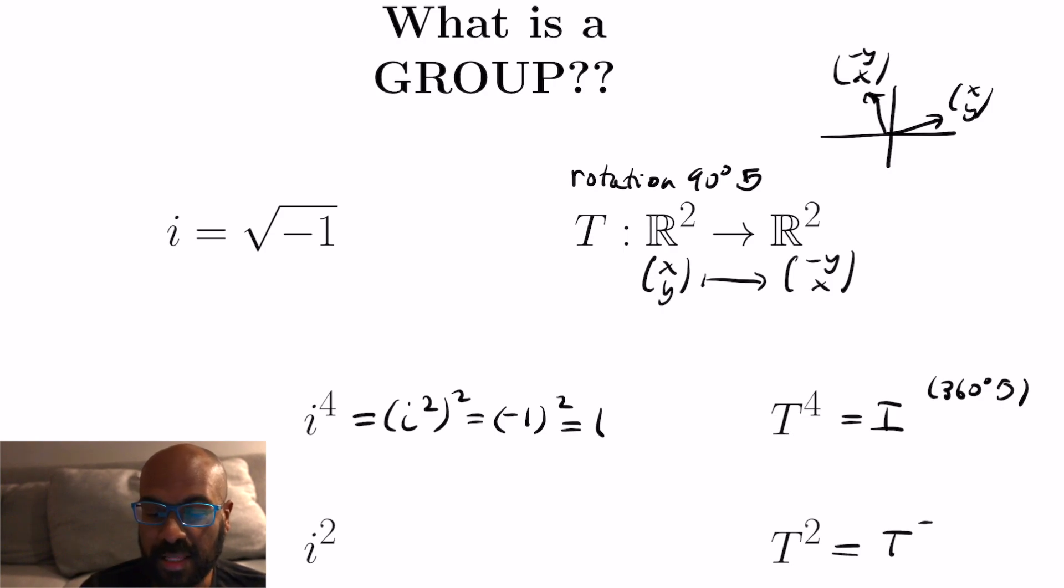And if you take T and raise it to the fourth power, you'll get the identity because you'll be rotating 360 degrees counterclockwise, which is the net effect of doing nothing essentially. If you look at T squared, then it's going to be the same as T to the negative two, the inverse of T. They're both rotation by 180 degrees. And i squared is i to the negative two as well because i to the fourth is one.